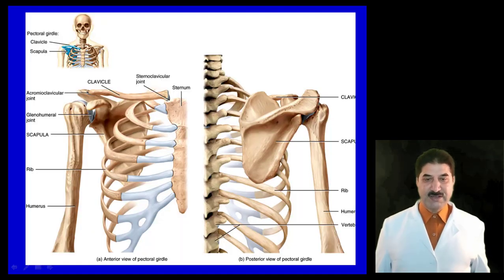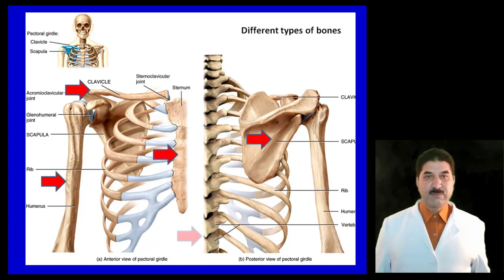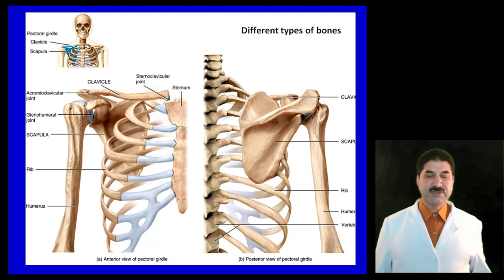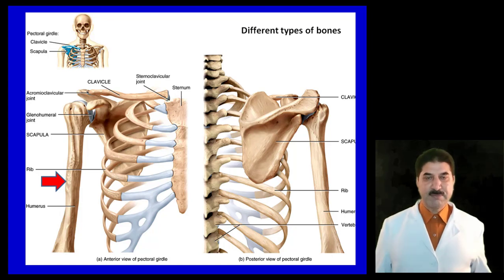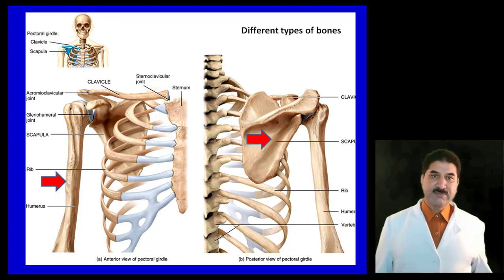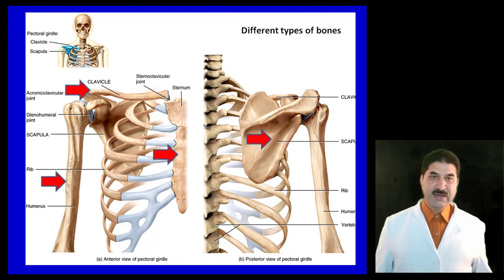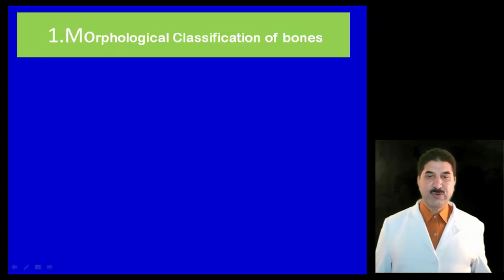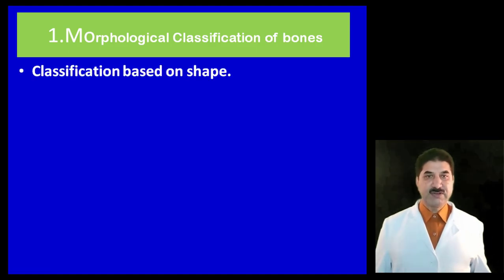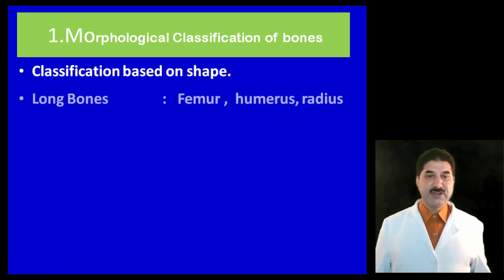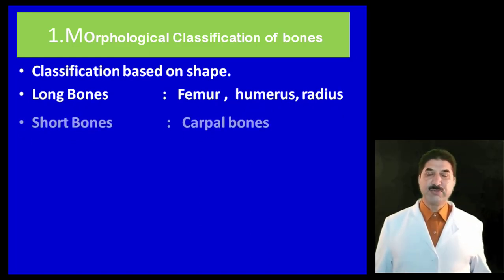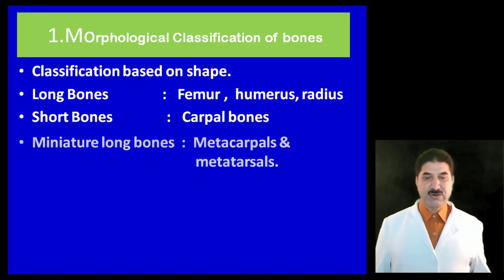How are bones classified? Looking at the skeleton, we find different types of bones. The humerus is a long bone; the scapula is a flat irregular bone; the sternum is again a flat bone; the clavicle is a long bone; and the vertebra is an irregular bone. Bones are classified based on their morphology — that is, shape. Long bones include femur, humerus, and radius. Short bones include the carpal bones.